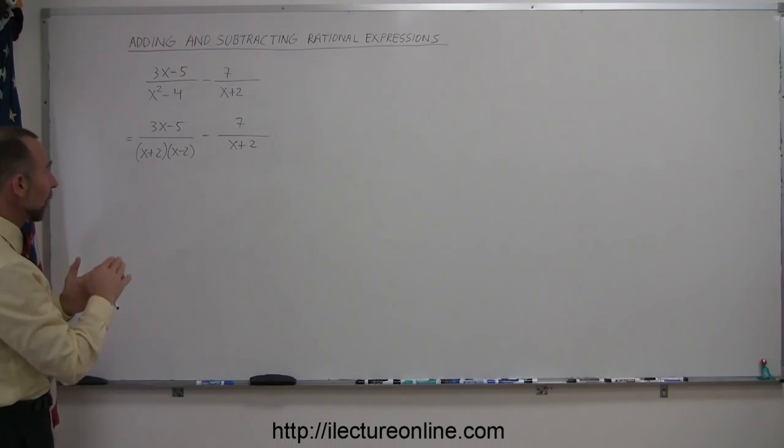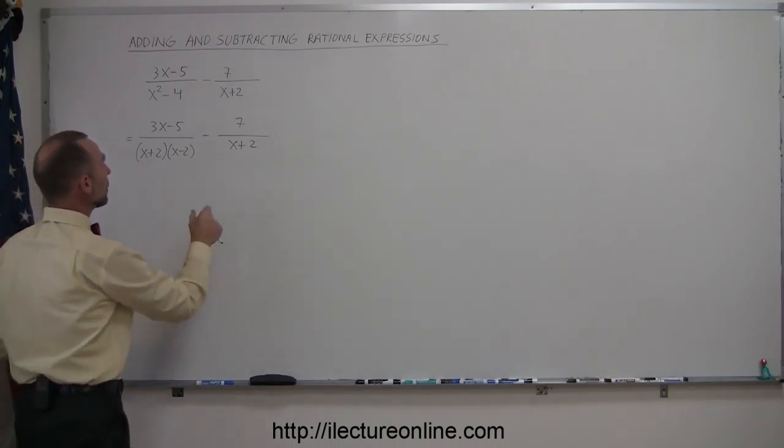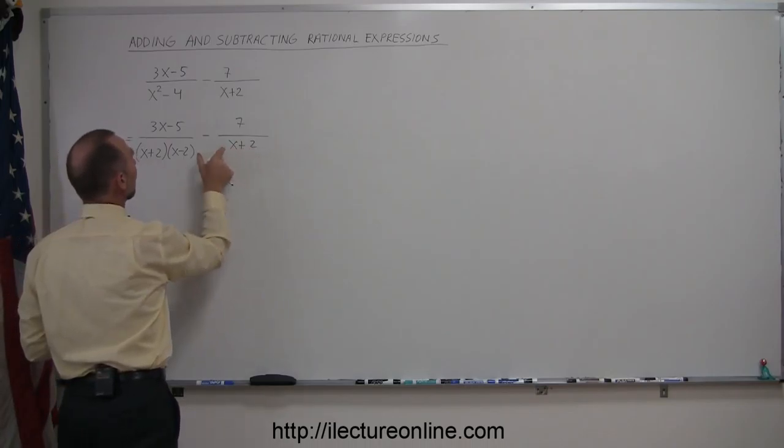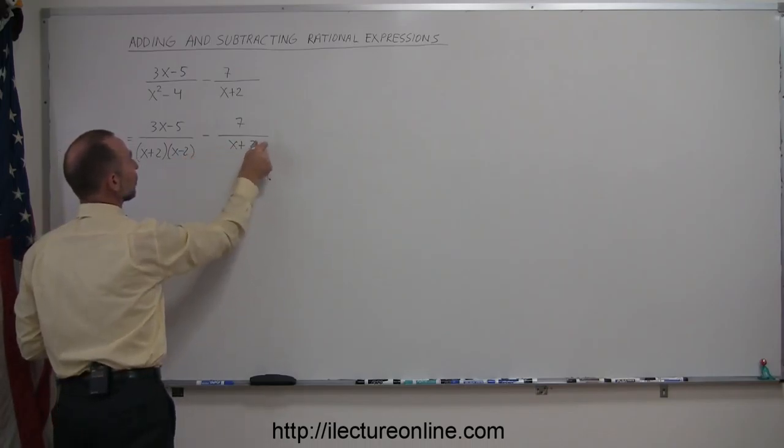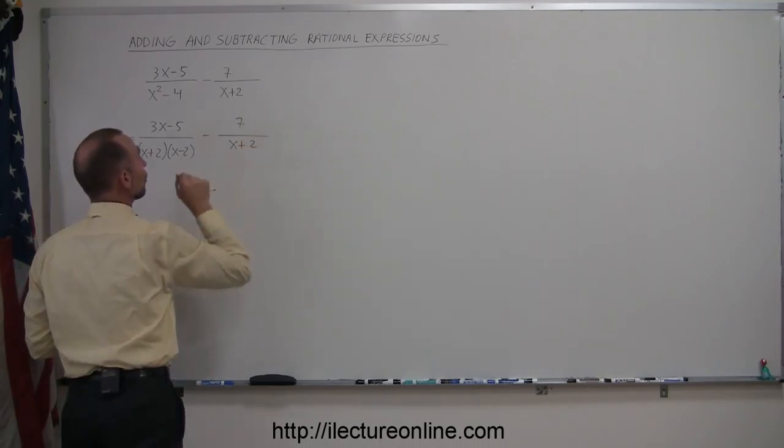So to make the denominators common, which is a technique you want to use to add and subtract rational expressions, you're going to need to multiply this denominator by the part that's missing here, which is x-2. Of course, if you do that to the denominator, you must do exactly the same to the numerator.